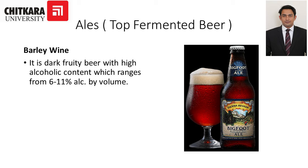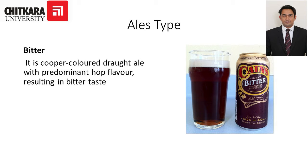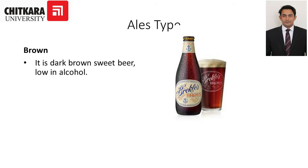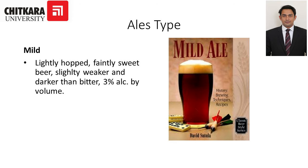Now let's look at the ale beer types. First we have barley wine — it is a dark, fruity beer with high alcoholic content ranging from 6 to 11% alcohol by volume. Next we have bitter beer — it is a copper-colored draught ale with a predominant hop flavor resulting in a bitter taste. Then we have brown beer — it is a dark brown, sweet beer which is low in alcohol content. Mild beer is a lightly hopped, faintly sweet beer, slightly weaker and darker than bitter.